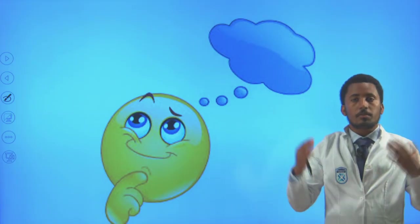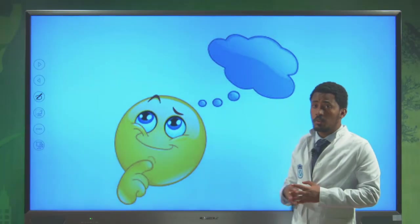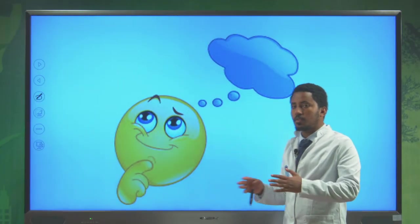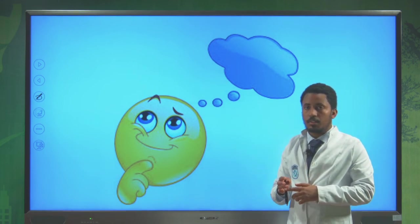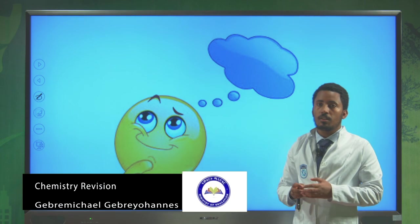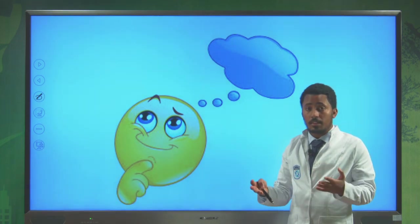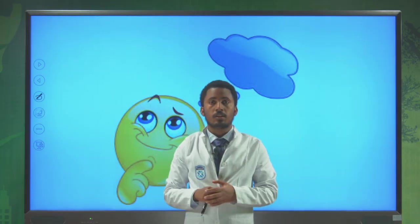Today we saw the scope of chemistry — we said chemistry can be classified into five main branches: physical chemistry, biochemistry, analytic chemistry, organic chemistry and inorganic chemistry. We also saw prefixes and explained what chemistry is. Dear students, that's all for today. See you in the next lesson.